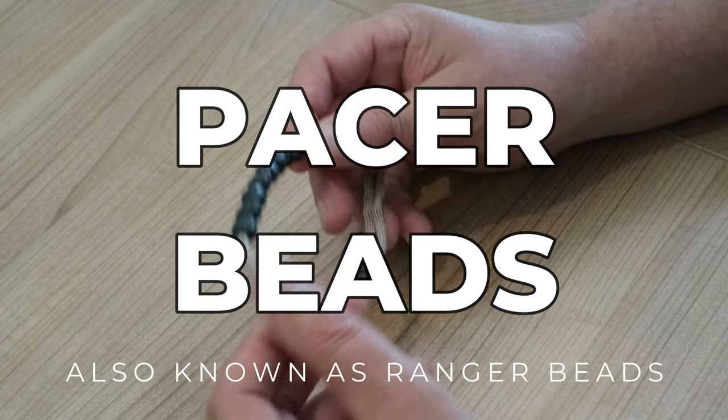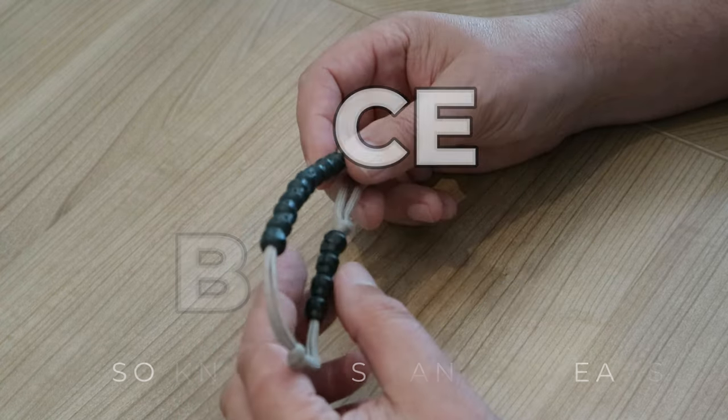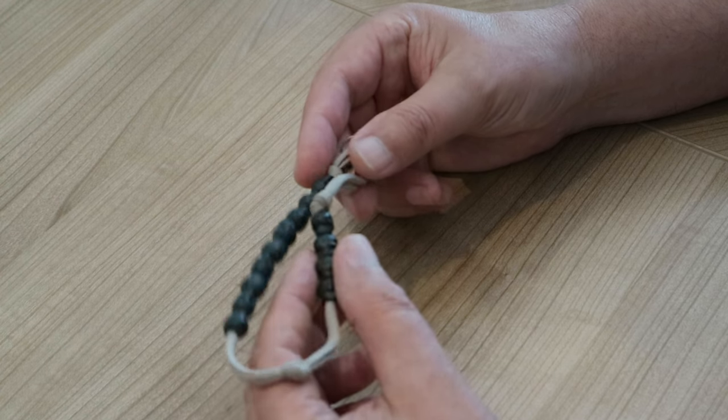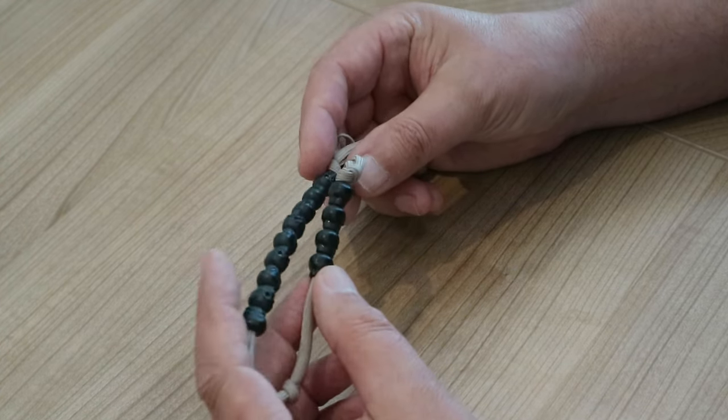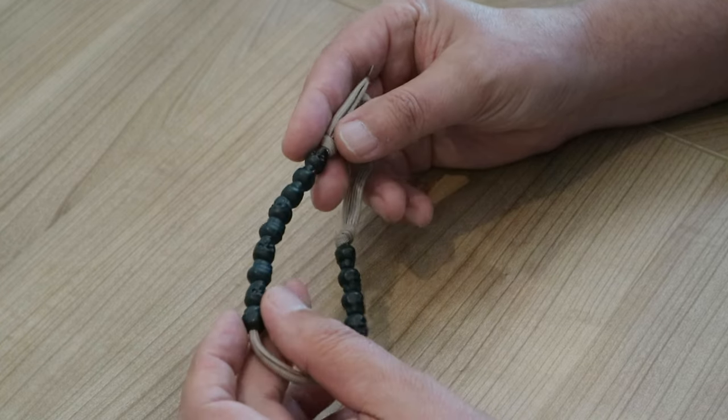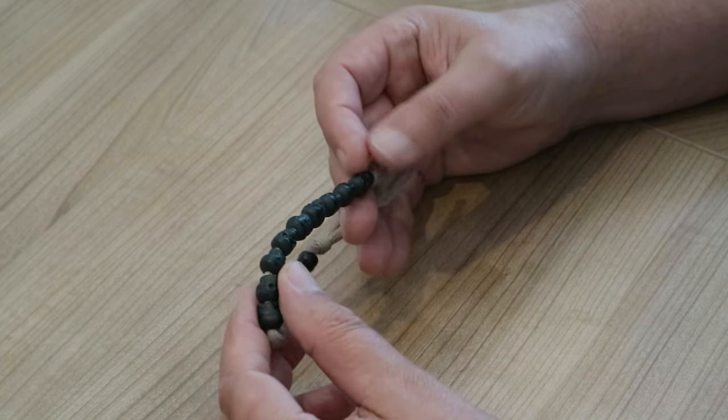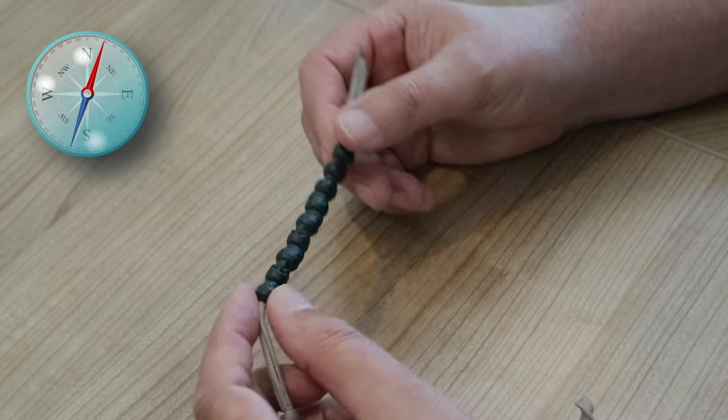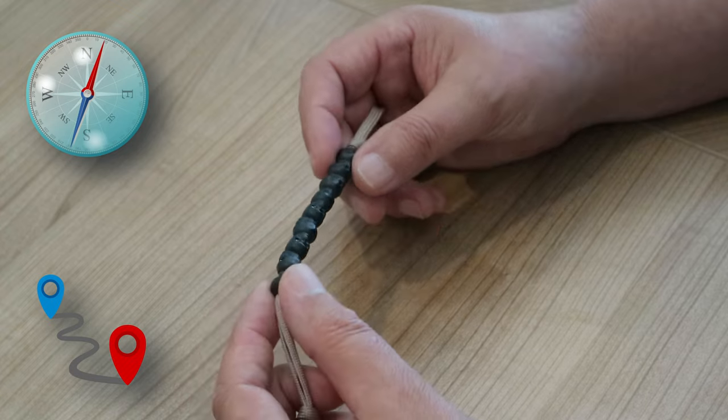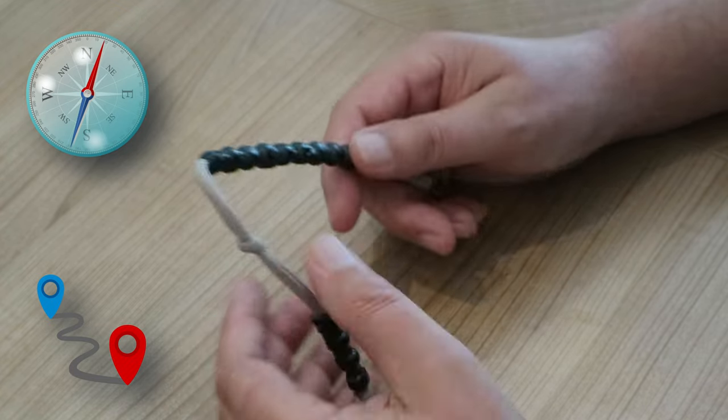Some people call them ranger beads and it's a navigational tool, navigation device I would say. Now how does it work? Well if you're navigating especially on foot, there are a couple of things you want to deal with. One is your bearing but the other is the distance that you went from A to B. That's where this comes in.